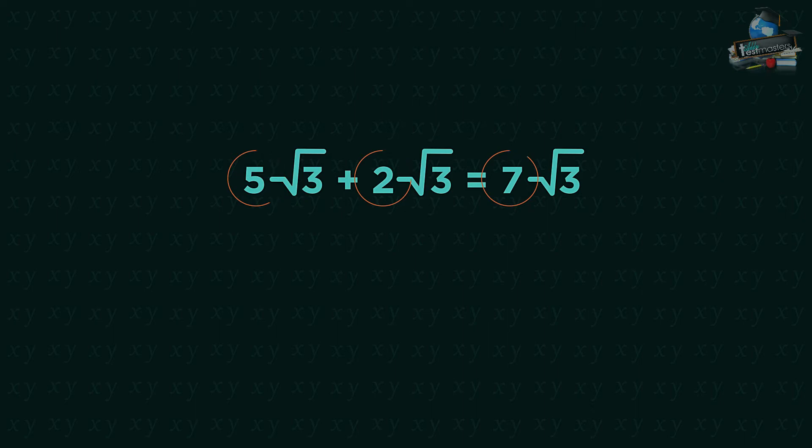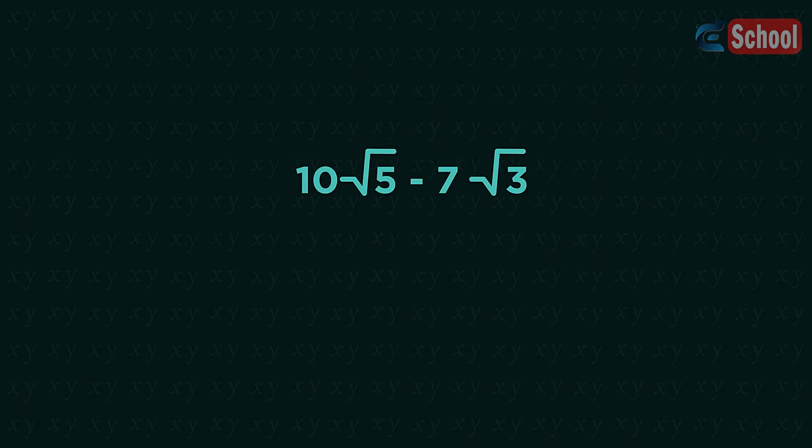So what's wrong here? Can we subtract these? No. Square root 5 and square root 3 are different, just like 10a take away 7b can't simplify. Nor can this.